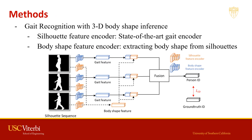For gait feature extraction, we introduce two encoders: one for silhouette feature extraction to identify the person, while the other is to extract the body shape from the sequential silhouette. For the silhouette feature encoder, we apply four different state-of-the-art gait methods for comparison — GaitSet, GaitPart, GLN, and GaitGL — which serve as our baseline methods.